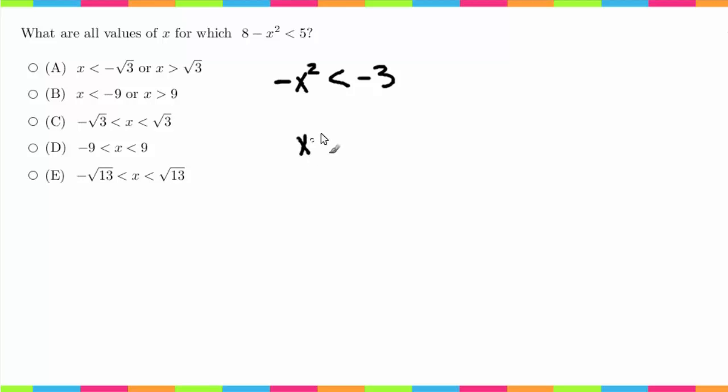So, now I'm going to get x squared is greater than 3. Now, to solve for x, I'm going to take the square root of this side and the square root of this side, and I'm going to get x is greater than 3. However, I guess actually I probably shouldn't quite go that far. x squared is greater than 3.